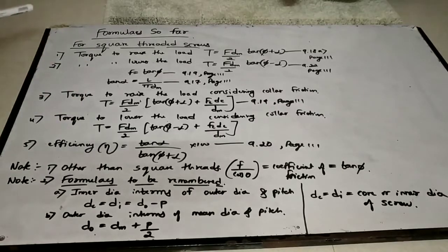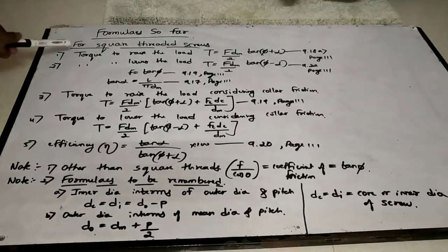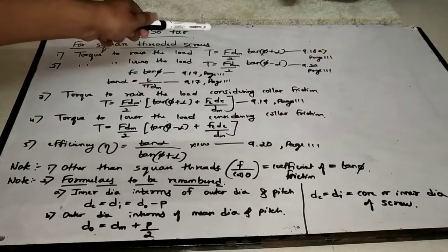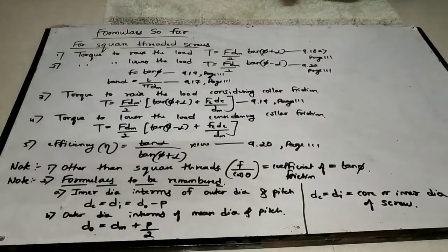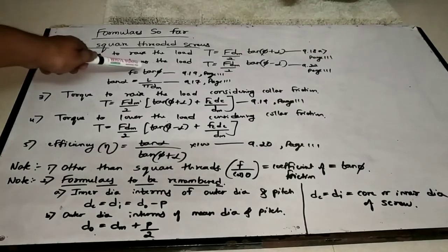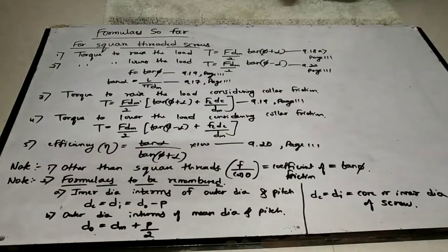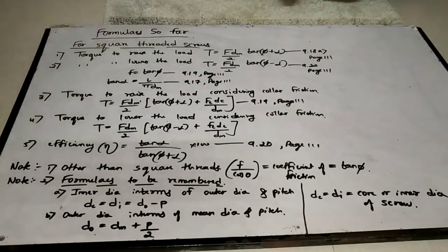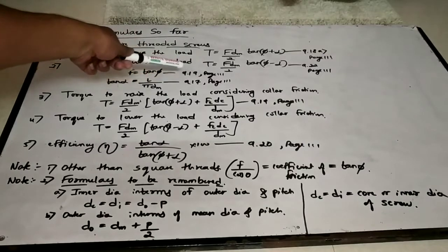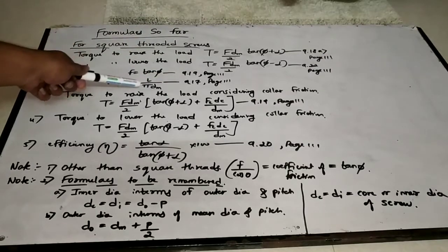For square threaded screws, the first expression derived is torque required to raise the load: T = F·dm/2 · tan(φ + α). The second is torque required to lower the load: T = F·dm/2 · tan(φ − α), equation 9.22, page 111. Note that the coefficient of friction f = tan φ, and tan α = l / (π·dm).